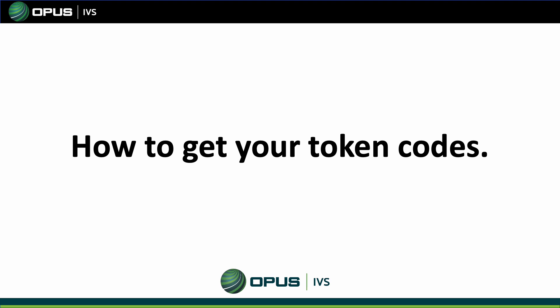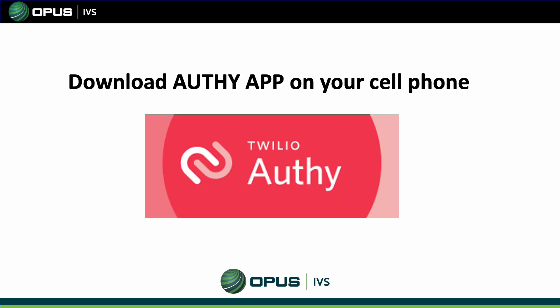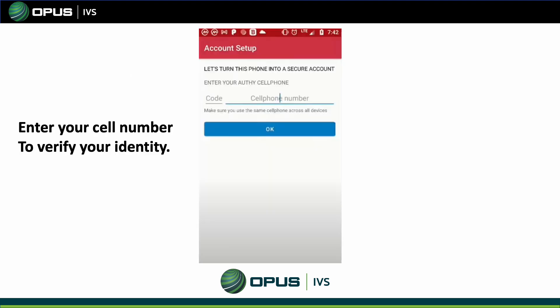How to get your own token: every single time you access your account, you will need a token to be entered so you can access your account. Go to your phone and download the Authy application. This is what the application looks like — download it to your cell phone.